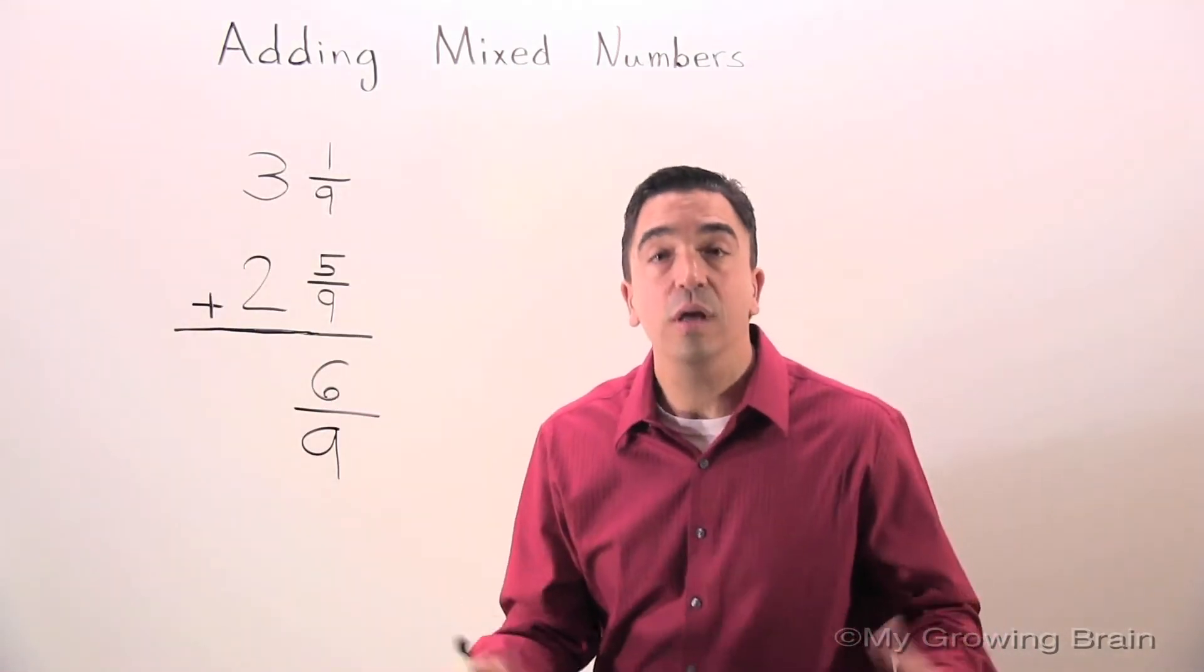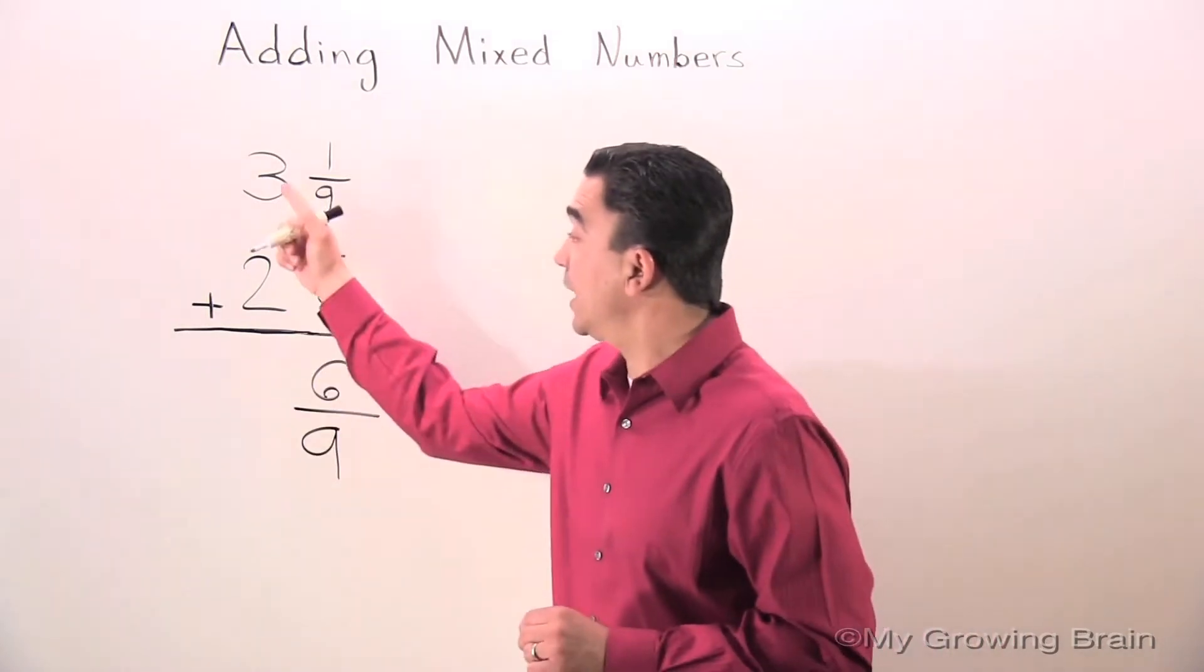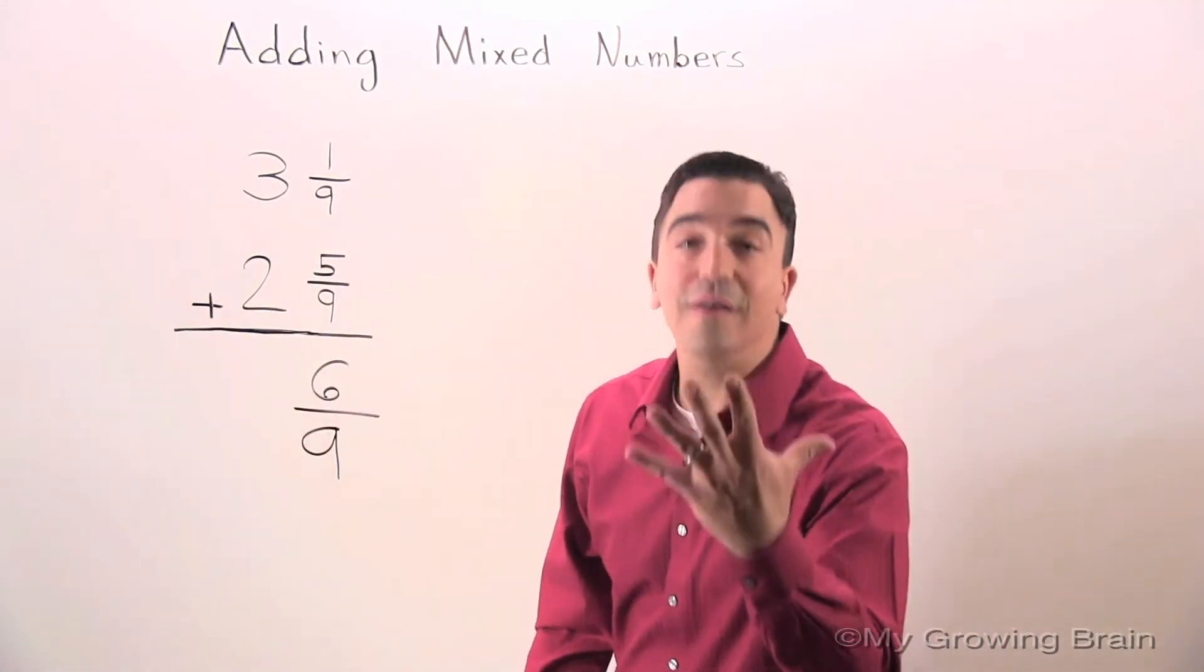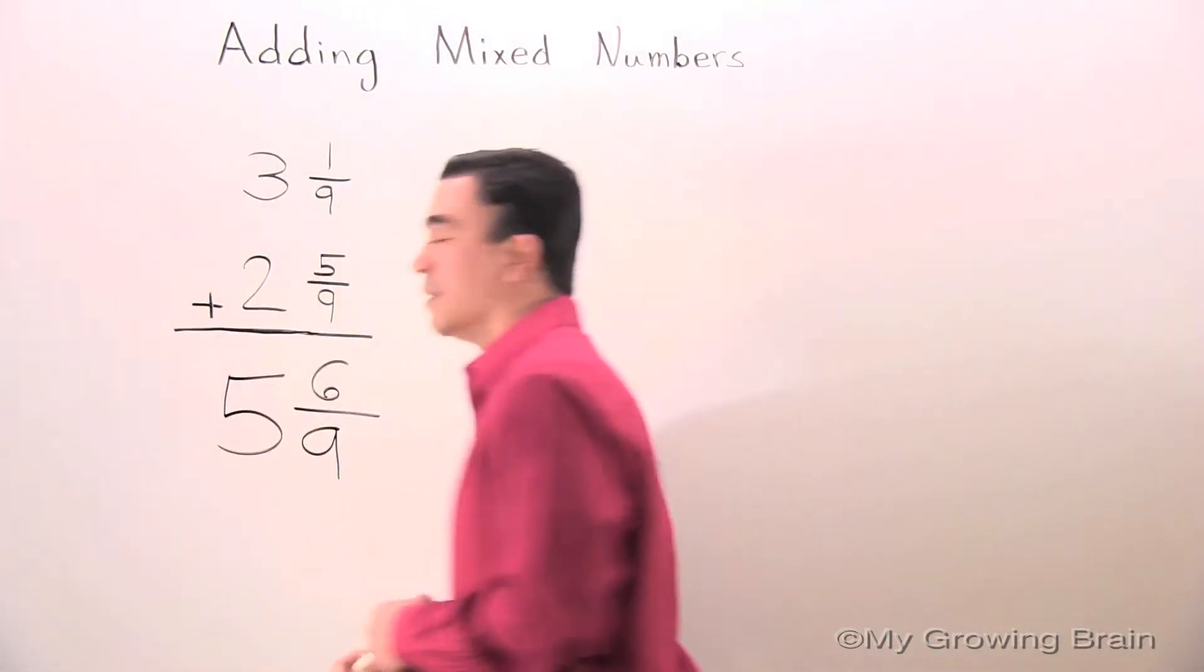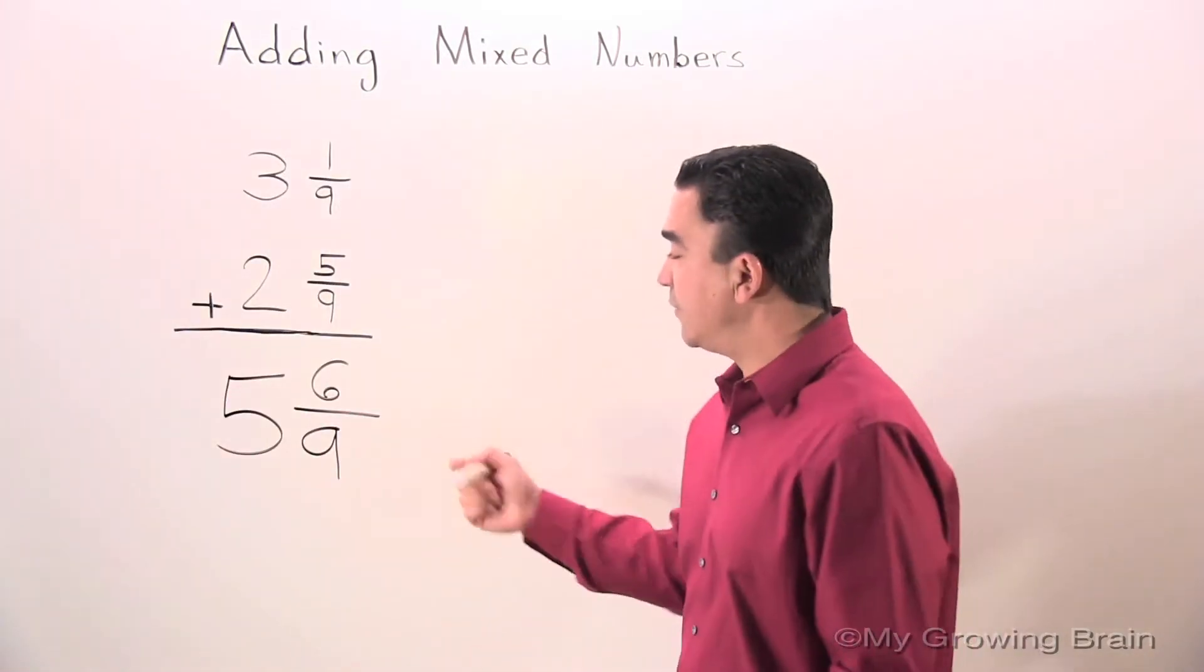Now, let's add the whole numbers. 3 plus 2 is 5. 5 and 6/9.